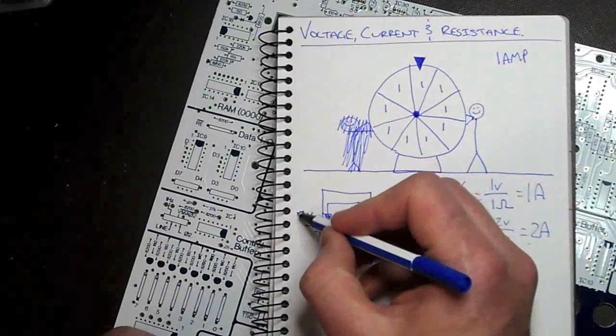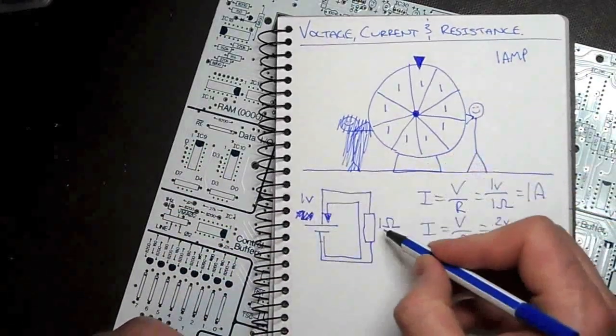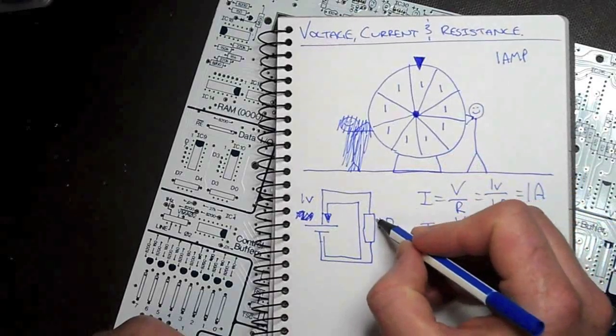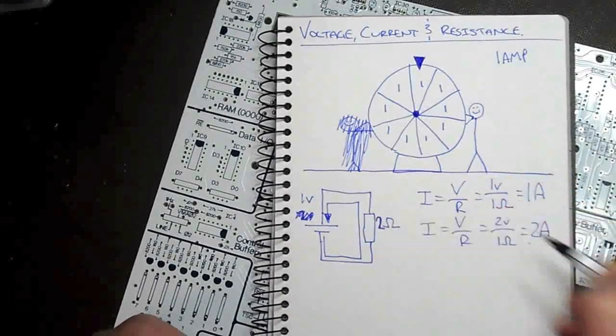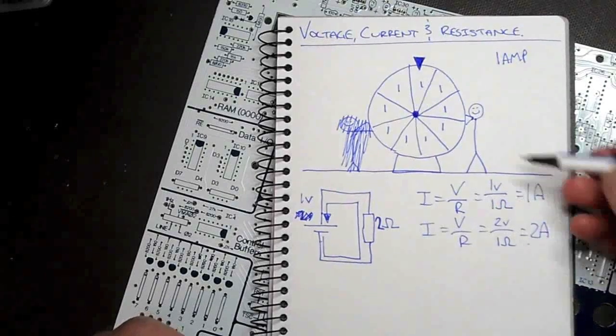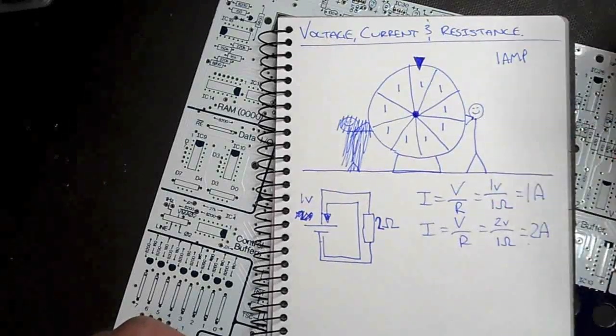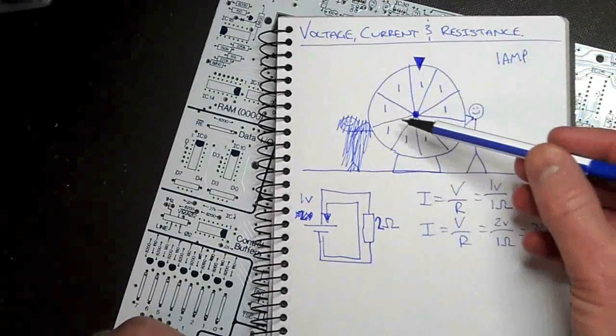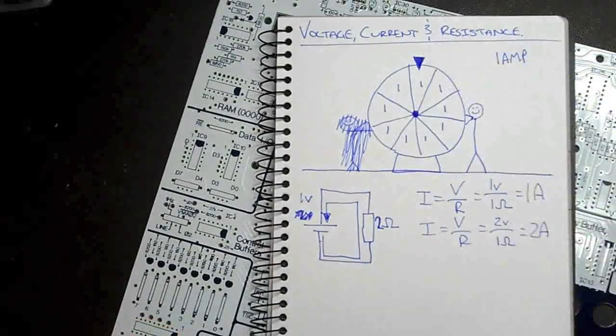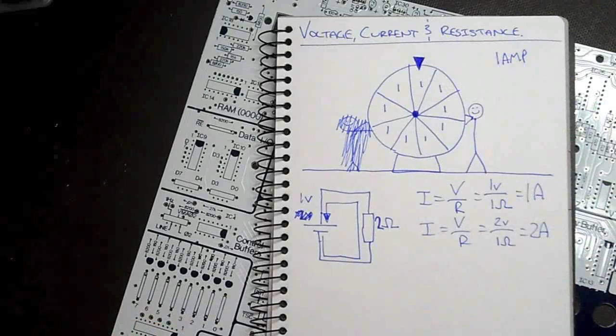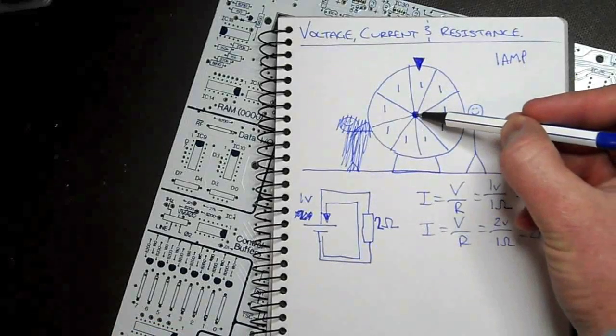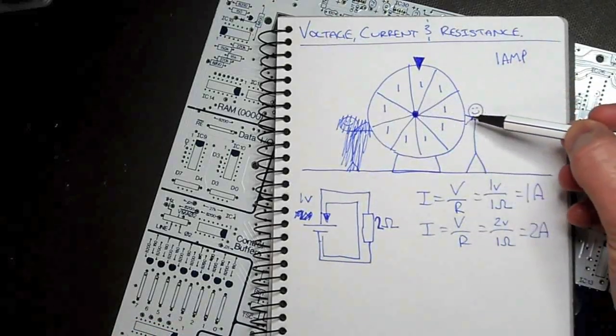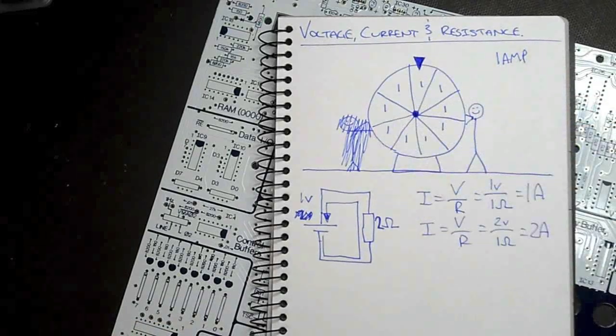What if I put this back to 1 volt, but I increase my resistance to 2 ohms? So I'm back to my original force. I'm going to push down on it with the same amount of force that made this spin with one segment passing here every second. So I got 1 amp. But now I've replaced it with the dodgy bearings. So that same amount of force is not going to make this spin as fast.